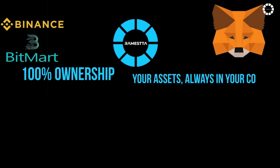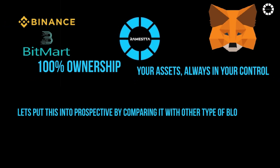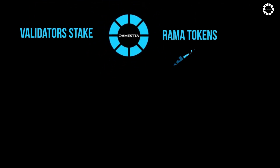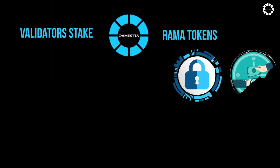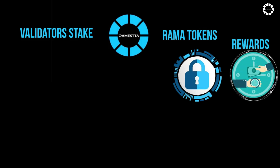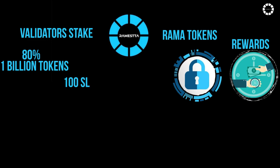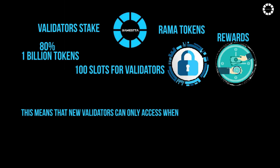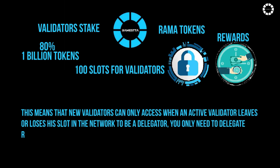Your assets are always in your control. Romesta has wide utility including staking, validation, and delegation. Validators stake their Rama tokens as collateral to work for the security of the network, and in exchange for their service, earn rewards. Romesta allocates 80% of its total supply of 1 billion tokens to fund the staking rewards. There are a total of 100 slots for validators, meaning new validators can only access when an active validator leaves or loses their slot. To be a delegator, you only need to delegate Rama to a validator.